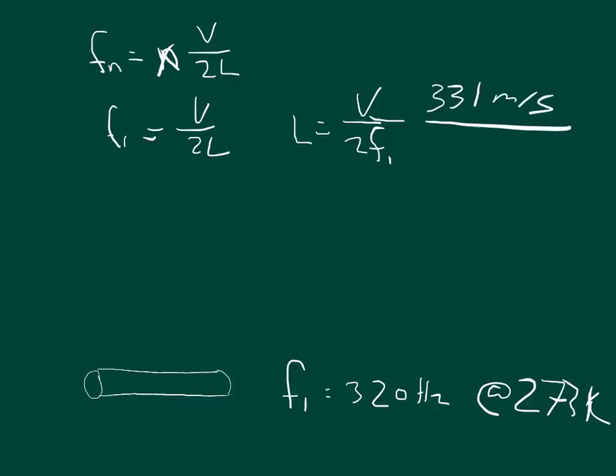And we know what the frequency is, it tells us it's 320, we're going to multiply that by 2. So we should get that the length of this pipe is 0.517188 meters.